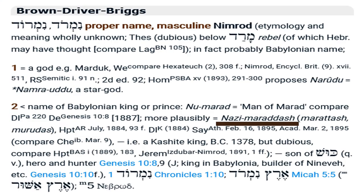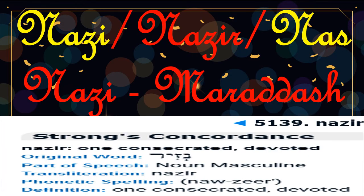Here we are revisiting that etymology when we were looking at the relationship between the Yoruba and Nimrod. You see that word Nazi — N-A-Z-I. We're going to look at how that ties this whole construct of Nimrod to the etymology of Naz. The variations of that word Nazi are related to the word Nazir, which is also related to Nazirite, by the way, and it means one who is consecrated or one who is devoted. So Naz is just a shortened version of Nazir.